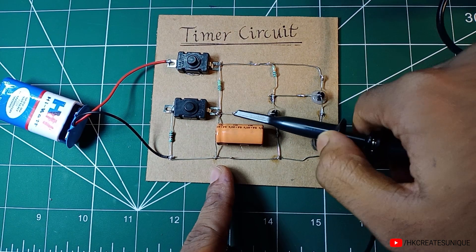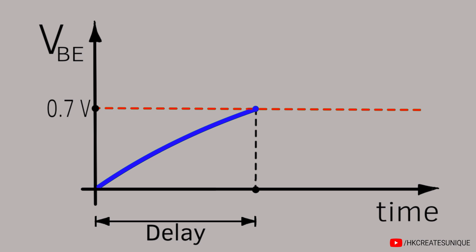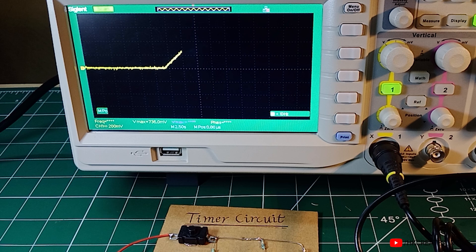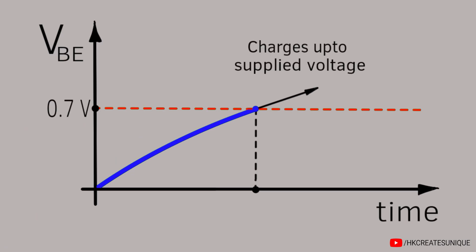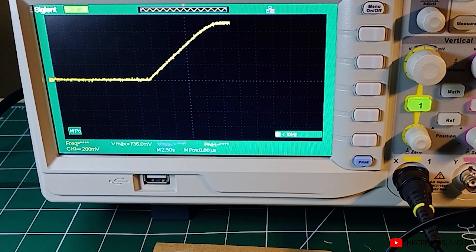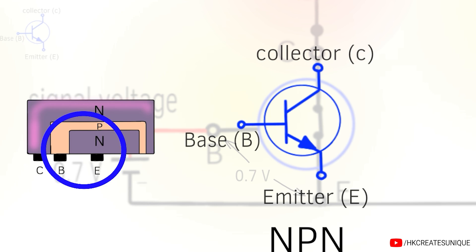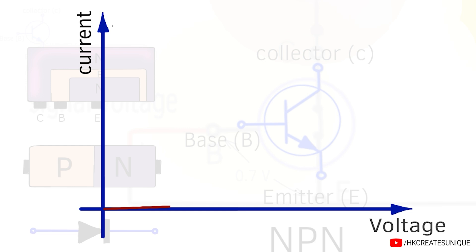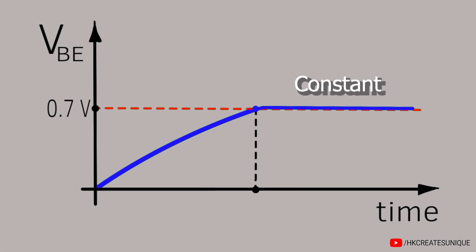For fun, let's check the voltage across the base and emitter of the transistor using the oscilloscope. The voltage across it increases, and the delay is up to the point when voltage reaches the threshold voltage of the transistor, as can be seen on the oscilloscope screen. You might think the capacitor charges up to the supplied voltage, but the voltage actually remains constant slightly above the threshold voltage. This is because the base-to-emitter junction of a transistor behaves like a P-N junction diode — the V-I characteristics show that for different values of base current, the voltage remains around 0.7V. That's why the voltage stays constant after the threshold is reached.